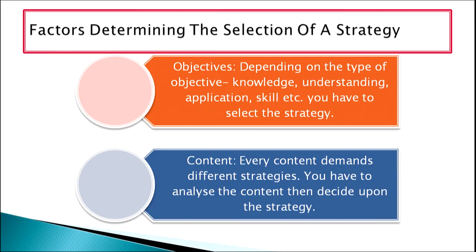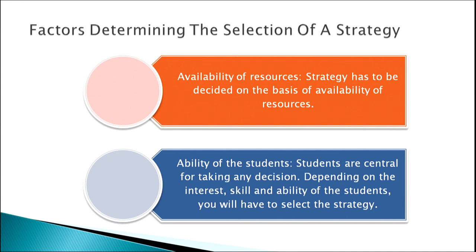There are various factors to consider when choosing a teaching strategy. First, objectives — depending on the type of objective, whether knowledge, understanding, application, or skill, you have to select the strategy. Second, content — every content demands different strategies, so you must analyze the content and decide on the requisite strategy. Third, availability of resources — the strategy must be decided based on what resources are available.